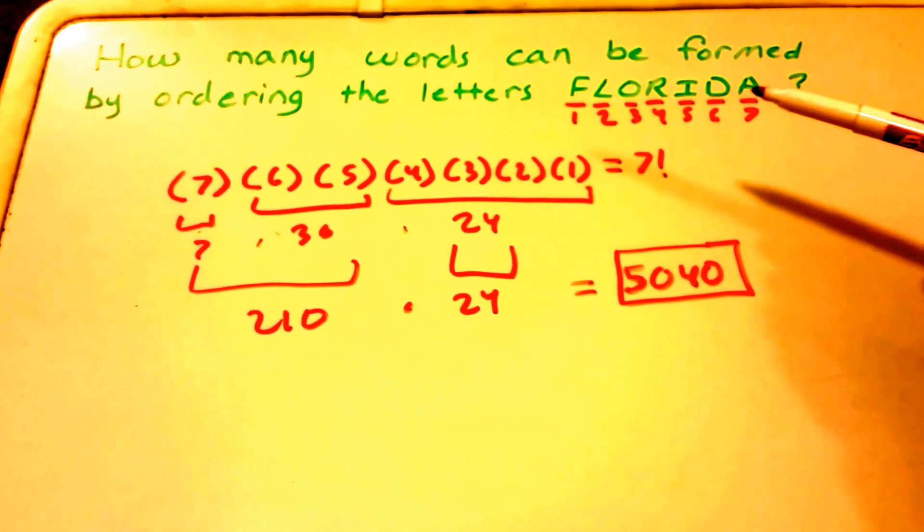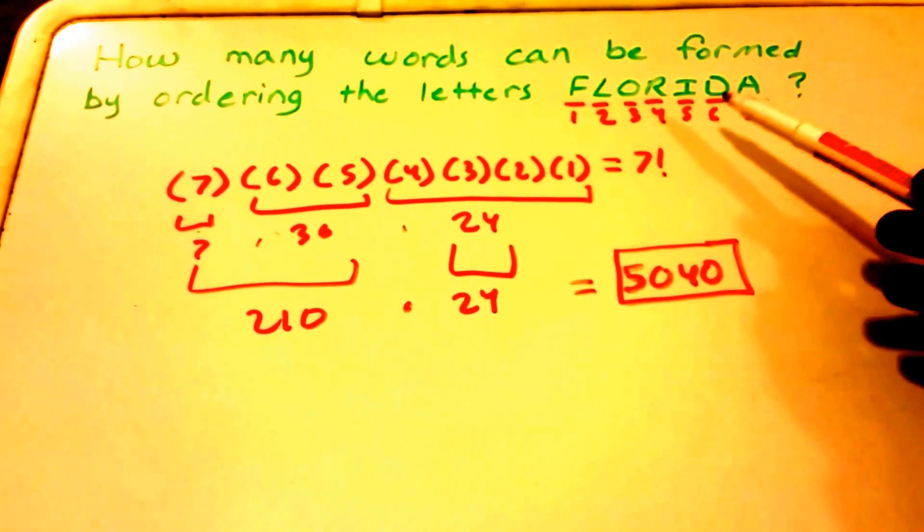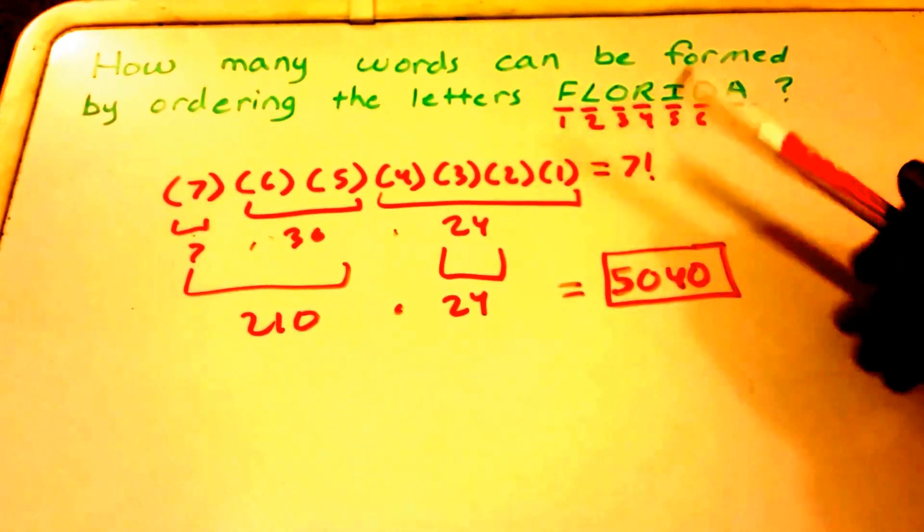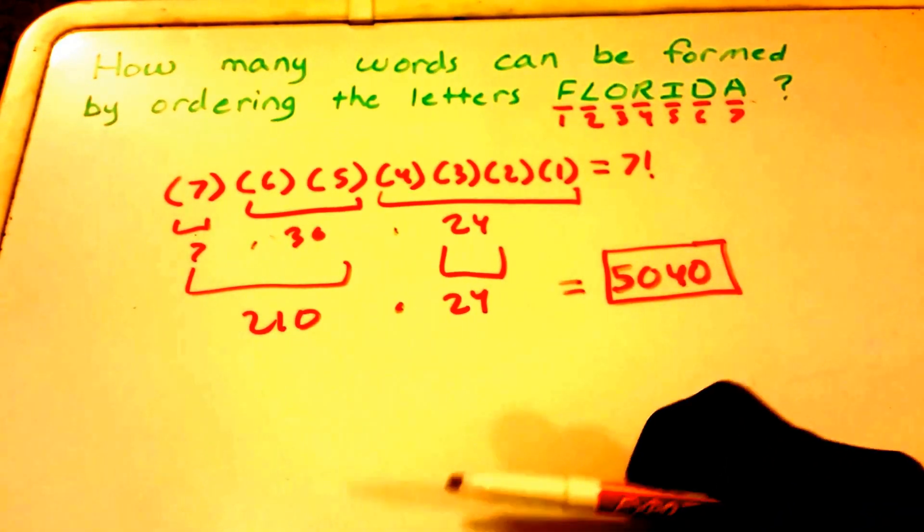Now of course we couldn't use the same method if all of these letters were not unique. If we had double A's we'd have to do it a different way, but because they're unique we can use this method to determine those orders.